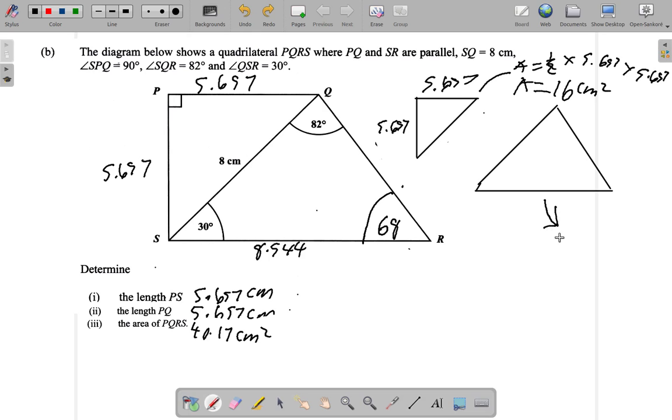What about this one? We have at the base 8.544. The vertical height going straight up is the same 5.657. So here the area of this one is half times base 8.544 times the height of 5.657. So 0.5 times 8.544 times 5.657 gives 24.17 centimeters squared.